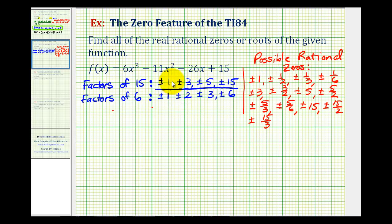So for example, if we started with this factor of one, we'd have plus or minus one over one, which is just plus or minus one, plus or minus one over two, or one-half, given here, plus or minus one over three, which is plus or minus one-third, and so on, until we came up with this entire list of possible rational zeros.